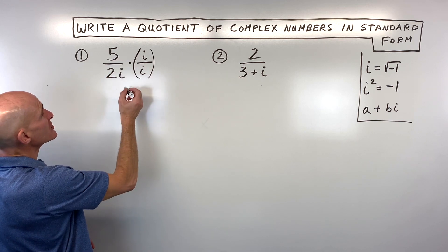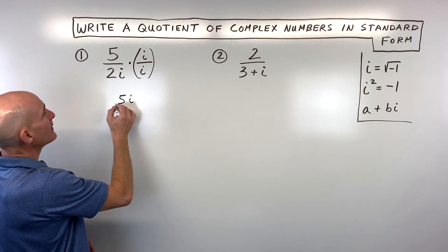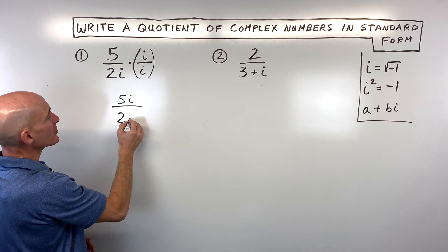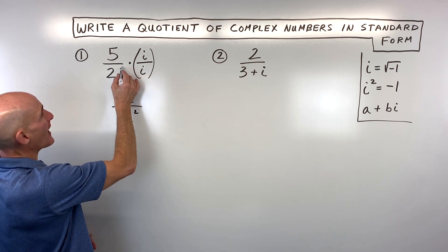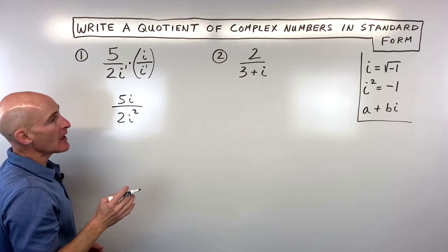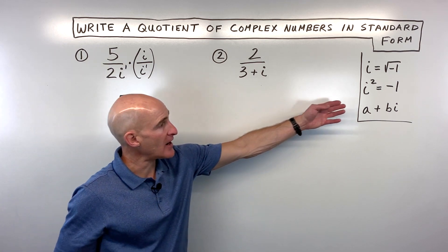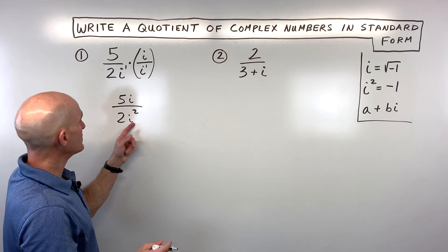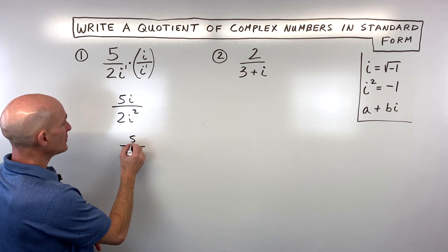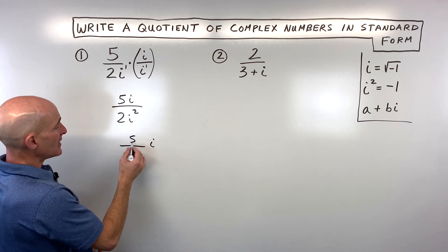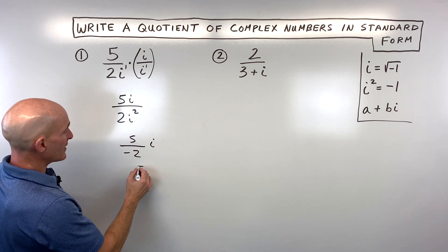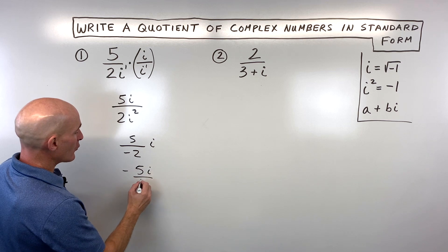If we multiply the numerators here, we get 5i. And the denominators, we get 2i squared. Remember, when you multiply, you add the exponents, so 1 plus 1 gives us i to the second here. And then remember, i squared is negative 1, so this is going to be negative 1 times 2, which gives us a negative 2.